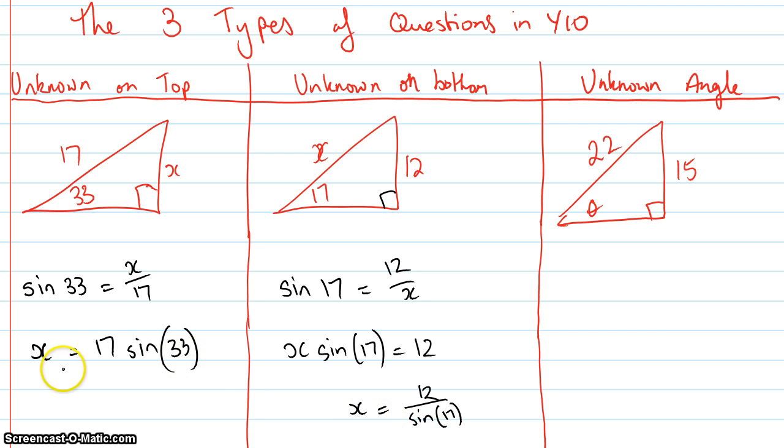Sometimes you have to multiply both sides by x and it's simple; other times you have to do a little bit of rearranging, but essentially you get the same sort of answer. Lastly, with the unknown angle, I'm dealing with sine because I've got the opposite and hypotenuse, so it's sine theta equals 15 over 22.